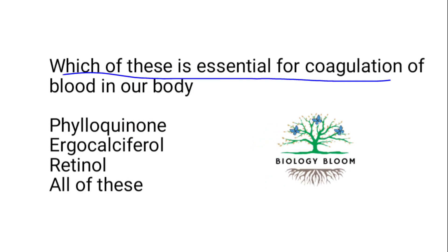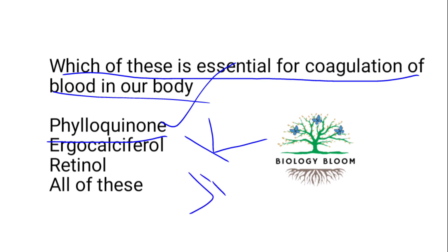Which of these is essential for coagulation of blood in our body? It is phylloquinone. In humans and other vertebrates, phylloquinone plays the role of vitamin K, which is required for blood coagulation and bone and vascular metabolism.